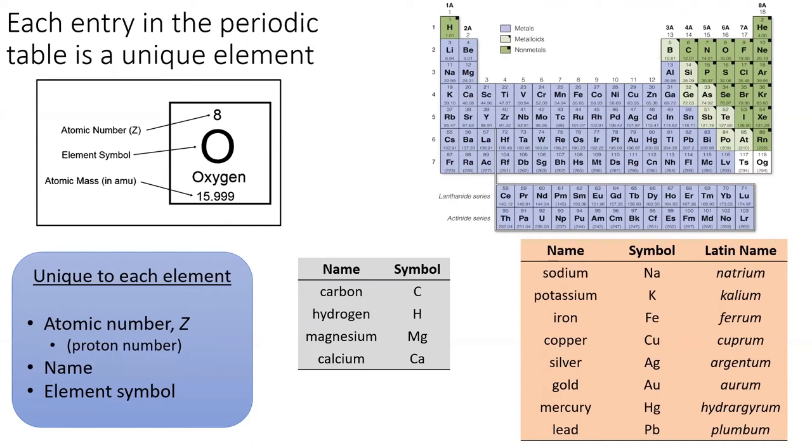The element's symbol comes from its name. However, sometimes this name was not the English name. In particular, watch out for the eight common elements in the orange table with non-intuitive symbols.